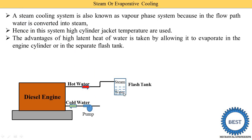The flash tank is a device where direct heat transfer takes place — cold water comes directly into the flash tank. Steam occupies the upper part of the flash tank and water collects in the lower part, because steam has lower density and rises to the top. The flash tank is mounted on a support.